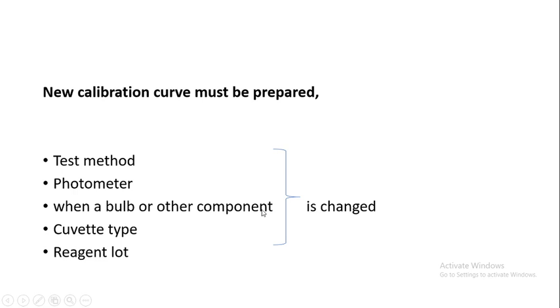A new calibration graph should be prepared whenever test method, photometer or colorimeter, bulb or component, cuvette type, or reagent lot is changed.